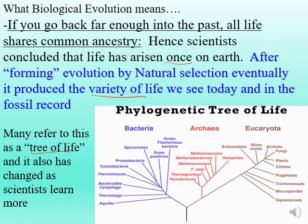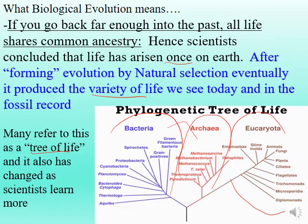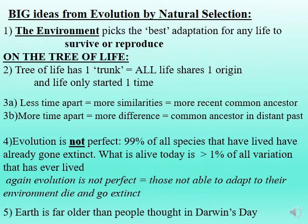You've probably heard of the tree of life before, but our understanding has changed. In a simplified version, there are three main branches based on cell type: the two prokaryotes — bacteria and archaea, which have no nucleuses — and the eukaryotes, which include animals, fungi, plants, and protists. Our understanding of the tree of life has evolved as we've learned more about genetics.